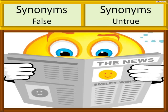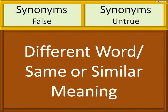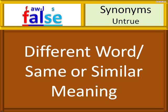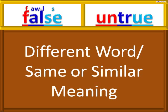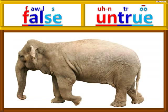False is similar to untrue. F-A-L-S-E, false. U-N-T-R-U-E, untrue. Elephants have black and white stripes — false. Elephants have black and white stripes — untrue. Elephants are gray — true.